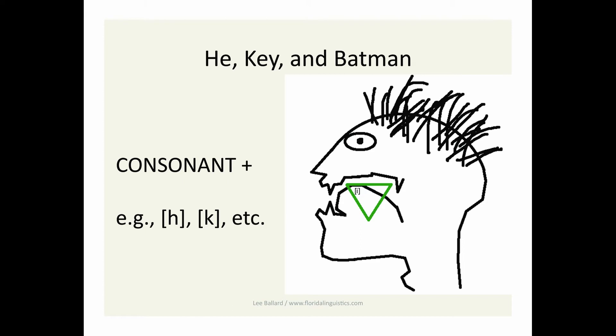But h is more common in English, and it's a glottal fricative. Let's continue with our example word he and pronounce key. The consonant represented by the letter k is a velar stop.